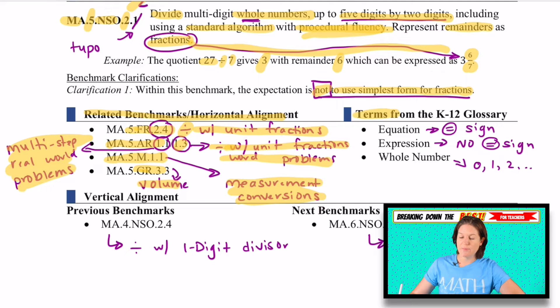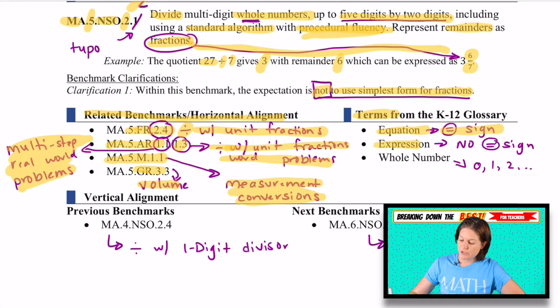Next, we have some terms from the K through 12 glossary. They've stated that you need to know what equation means. That means that there's just an equal sign present. We're trying, we've got two different sides that need to balance each other out. Expression means that there's no equal sign present. It's one side of the equation. Maybe we need to find the value of the expression, but there is no equal sign present.